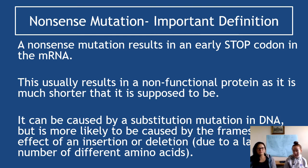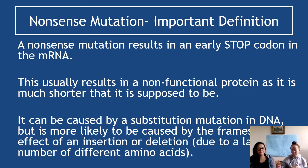A nonsense mutation can be caused by a substitution mutation in DNA, but is more likely to be caused by a frame shift, because a frame shift affects more amino acids. The more amino acids that are affected, the higher the chance that one of them will be changed into a stop codon.